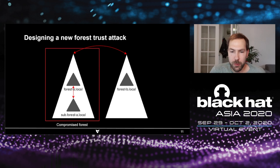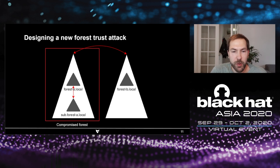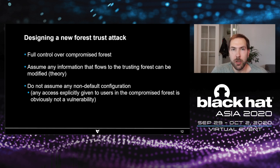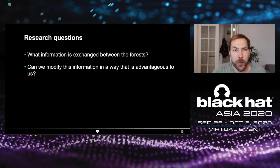Before we start, we have to go over some assumptions. We assume that we have compromised forest A somehow, and that anything in forest A is under our control — anything on the domain controller, on the server, or anything exchanged between forest A and B. We also assume that anything transferred can be modified. We don't assume any non-default configuration or custom setup, because if permissions are explicitly granted, that's obviously not a vulnerability. So this leaves the question: what information is exchanged between the two forests, and can we modify it to gain an advantage?